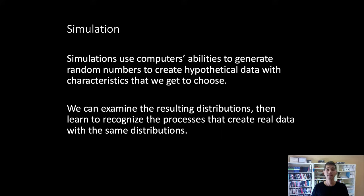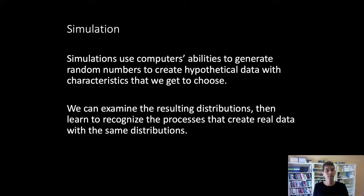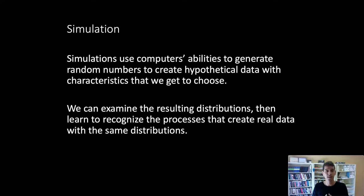Simulation lets us work the other way. Using a computer to create hypothetical data, we can decide what the process is and what it looks like that creates the data, then look at that hypothetical data at the end. When we control the process that creates the data, we're creating our own hypothetical world and we can train ourselves to understand what the data look like when the world works one way versus another. When we see those kinds of data in the real world, we can understand if a distribution looks a particular way, it might be because the process that created it is similar to a hypothetical process we created in simulation.